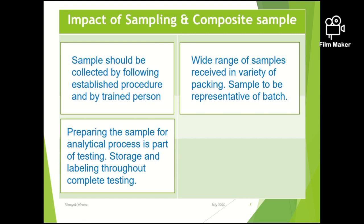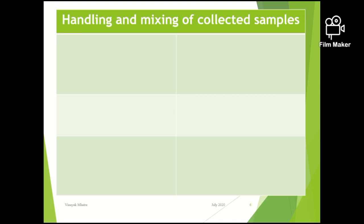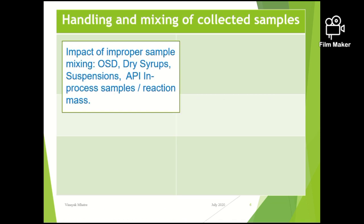The sample must be representative of the batch — that is another important aspect. Precautions should be taken for composite samples: you typically take five to six samples from individual containers of a batch, then mix them. Sometimes tablets are triturated to get a composite powder, and precautions should be taken in that step as well. The impact of improper sample mixing should be well understood for oral solid dosage forms — tablets, capsules, dry syrups, suspensions, API in-process samples — and appropriate training should be given on what precautions to take.